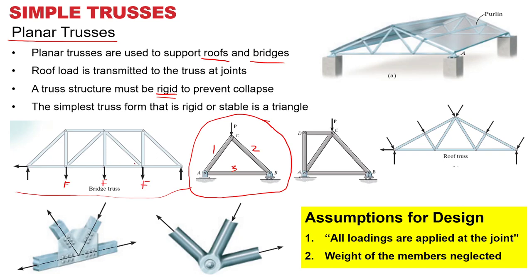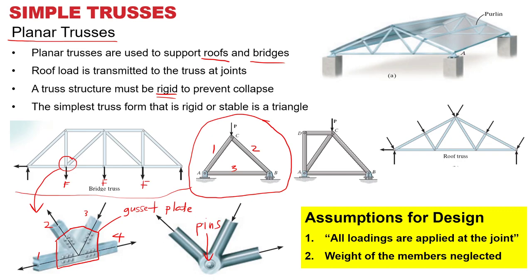So this is what's happening in a bridge. If you look at all these connection points — for example this enlarged view — you've got members. Here you have four members joined together with something called a gusset plate. Sometimes you join all these things with pins. But in both cases we're going to analyze them similarly — we're going to treat the whole thing as one single particle, one single point.